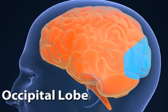However, tingling in the skin usually is not due to seizures. The back lobe of the brain is the occipital lobe. It contains brain cells responsible for vision. Seizures in the occipital lobe can produce flashing lights, shimmering lines, or visual hallucinations.